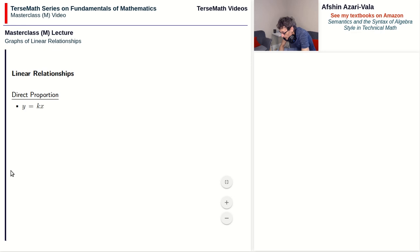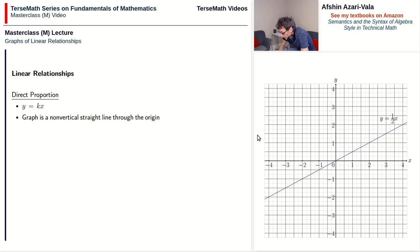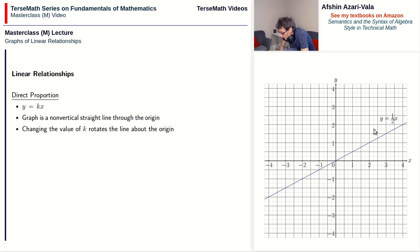Next, we have direct proportion problems. The equation for these is y equals kx, with k being a constant. The graph is a non-vertical straight line going through the origin. Here is an example with k equal to one half: y equals one half x, so y is half of x. For direct proportion, changing the value of k rotates the line about the origin — the larger the value of k, the steeper the line becomes. Comparing y equals one half x and y equals 3x, as k increases from one half to 3, the line becomes steeper, rotating about the origin.